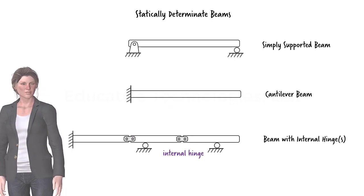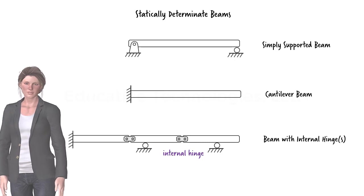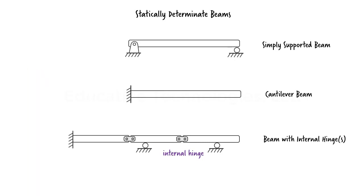Before we embark on the analysis of these beams, let's talk about their supports. Three types of idealized supports are generally used in beams: roller support, pin support, and fixed support.